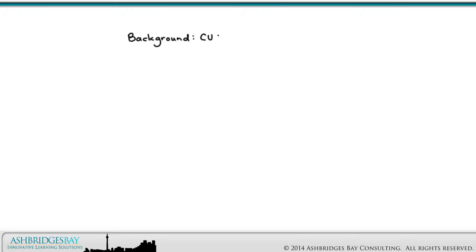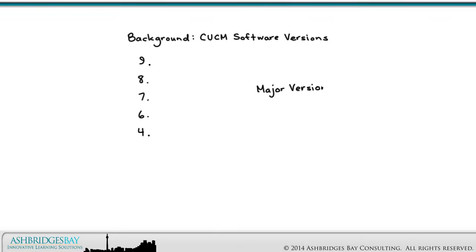First, some background information on CUCM software versions. The numbering convention for CUCM software versions starts with a major version — for example, versions 9, 8, 7, 6, and 4. Almost no one is on version 5, so we won't worry about that one. Version 10 is out now, but Enterprise 20 is still at 9.1. This represents the major version.